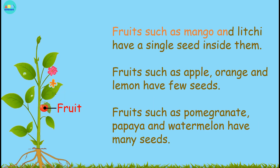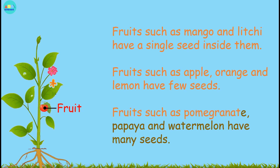Fruits such as mango and litchi have a single seed inside them. Fruits such as apple, orange, and lemon have two seeds. Fruits such as pomegranate, papaya, and watermelon have many seeds.